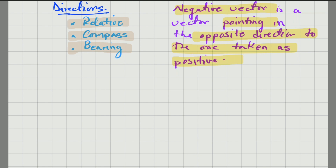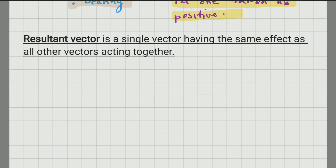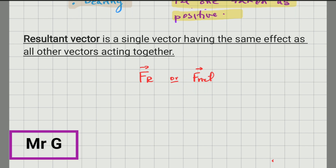To finish this section, we're going to recall what a resultant vector is and how to add vectors. This is one of the most important definitions for the whole year: a resultant vector is a single vector having the same effect as all other vectors acting together — in other words, it is the addition of all the vectors. The symbol for resultant vector is FR with a capital R, or it could also be net force if it is a force. It could be resultant displacement, resultant velocity, and so on.